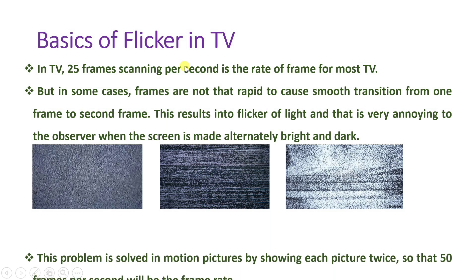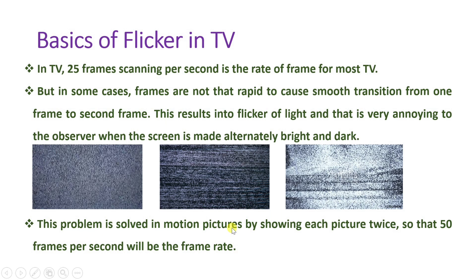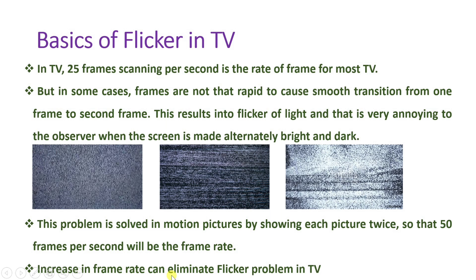The solution to this flicker is to increase the rate of frames by twice. We have been discussing 25 frames per second, but if we increase it to 50 frames per second, we can remove flicker. So to eliminate flicker, increase the frame rate — that will eliminate the flicker problem in television.